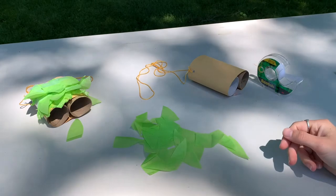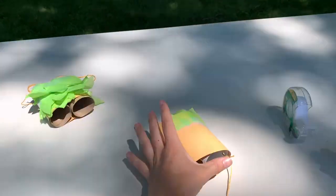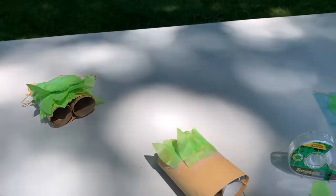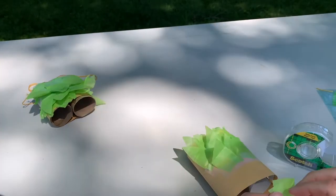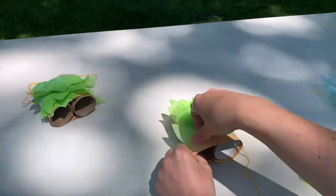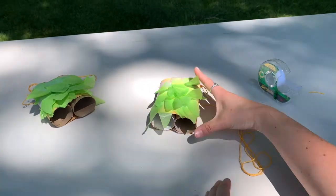There. Okay. And then I'm going to start taping each piece on. If you have glue, you can glue your pieces on. You can go around your backyard, you can find some leaves and anything else you want to decorate it with and you can decorate it that way too.